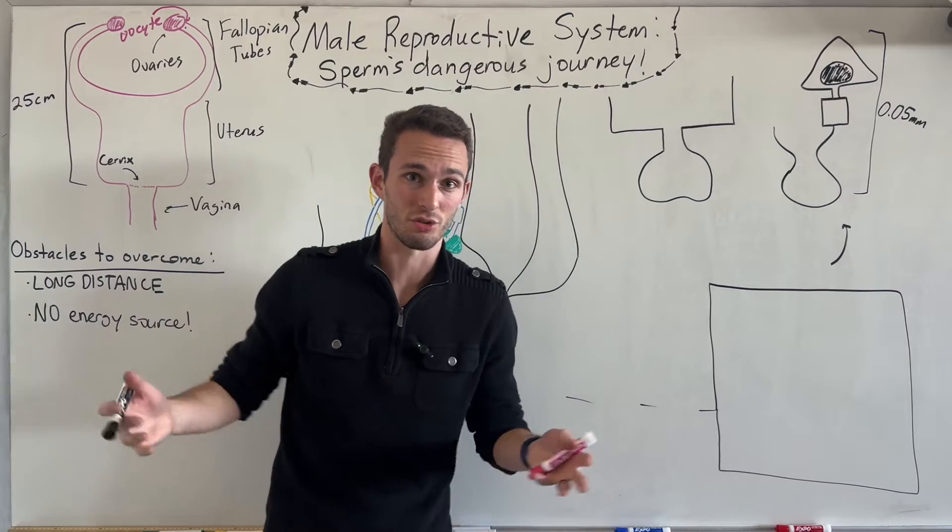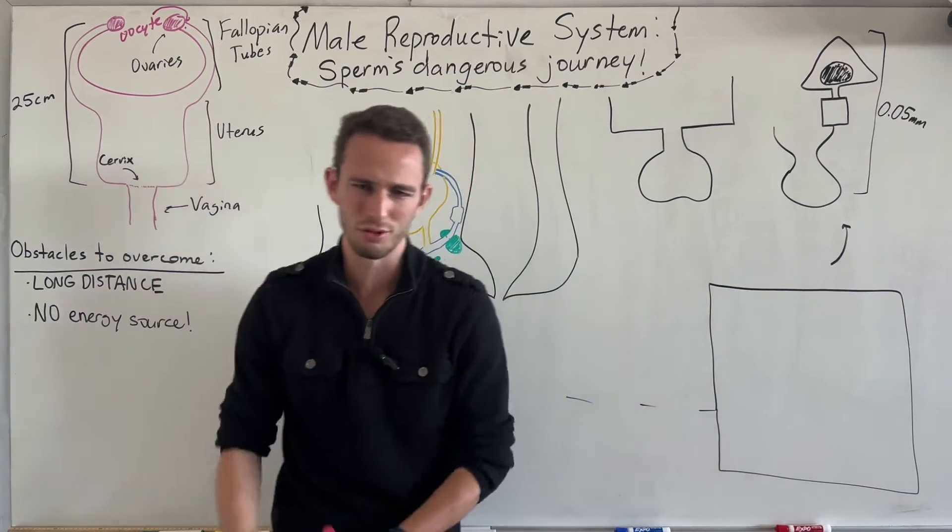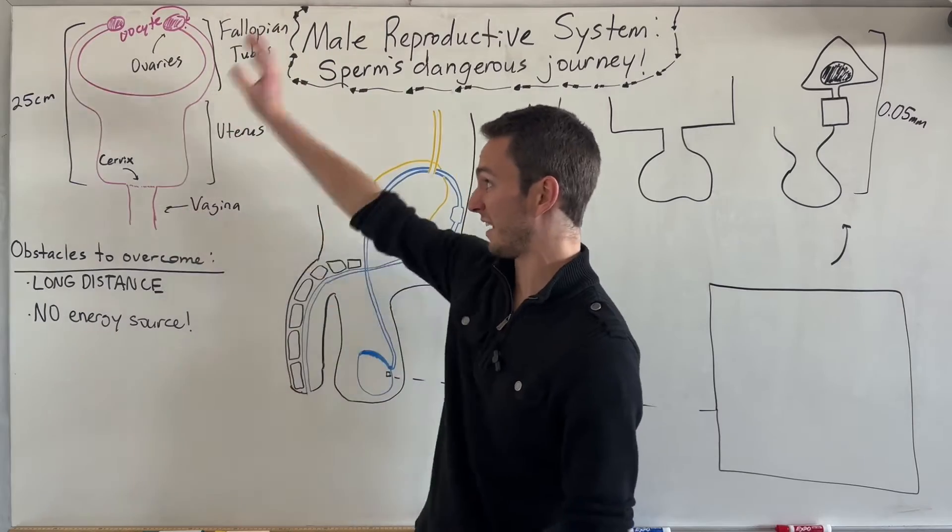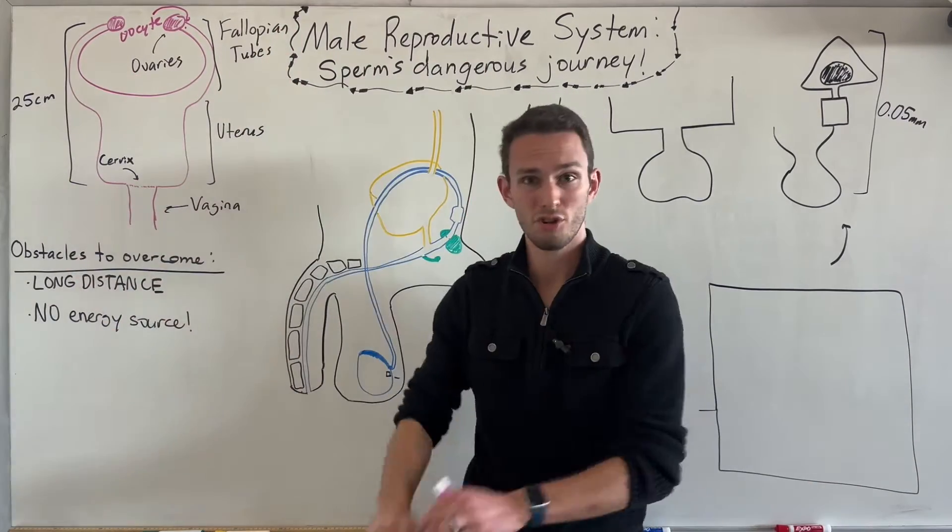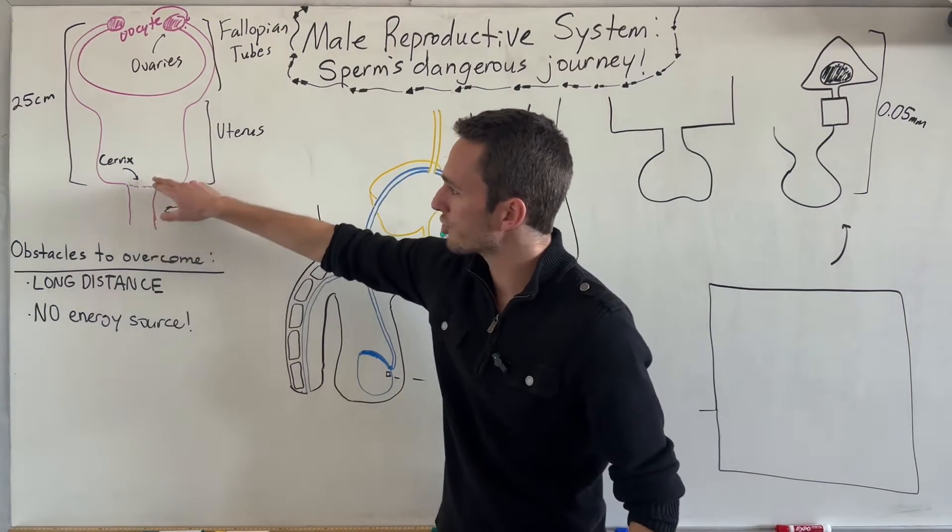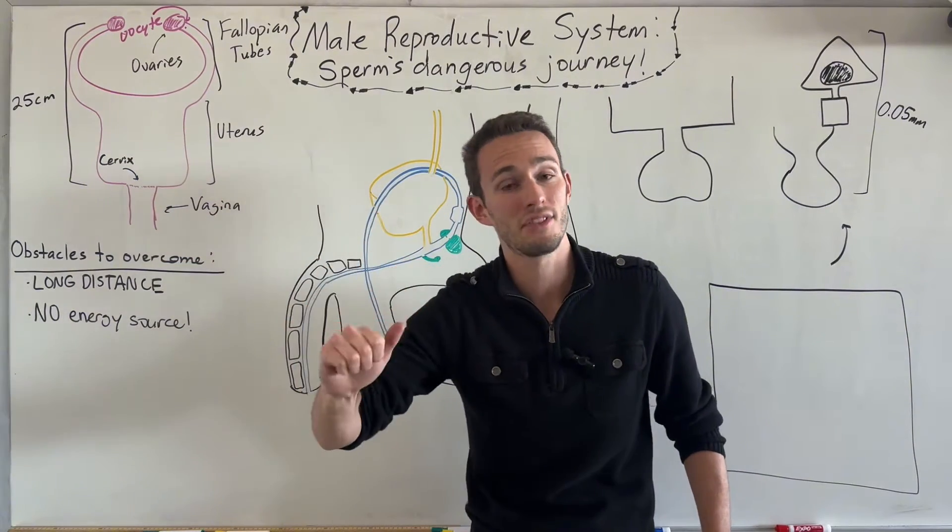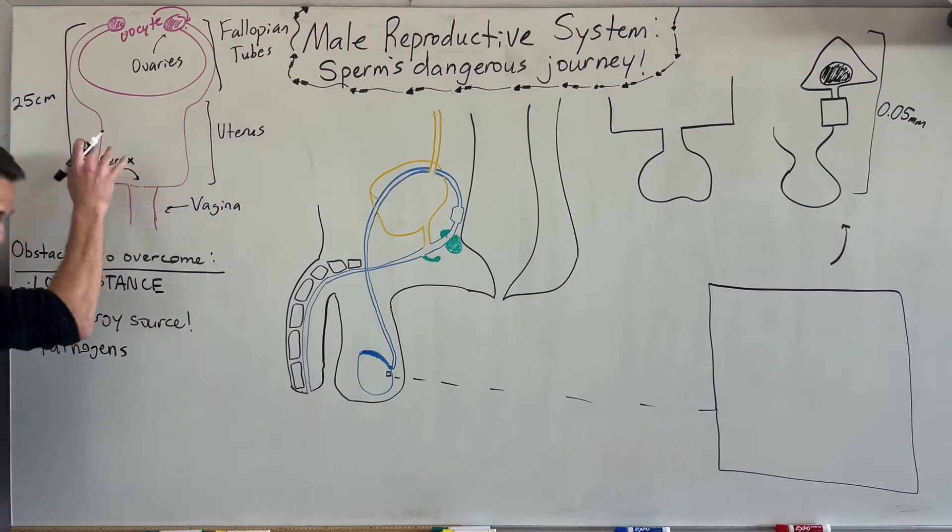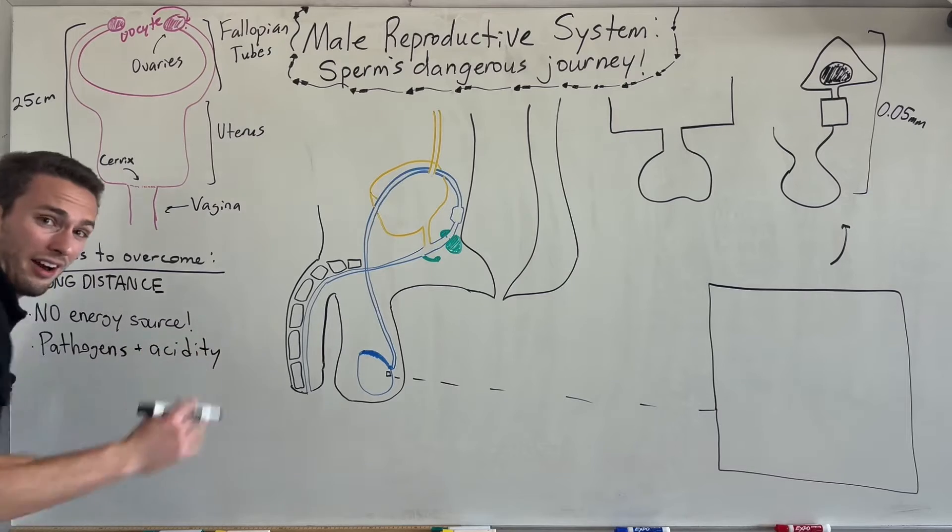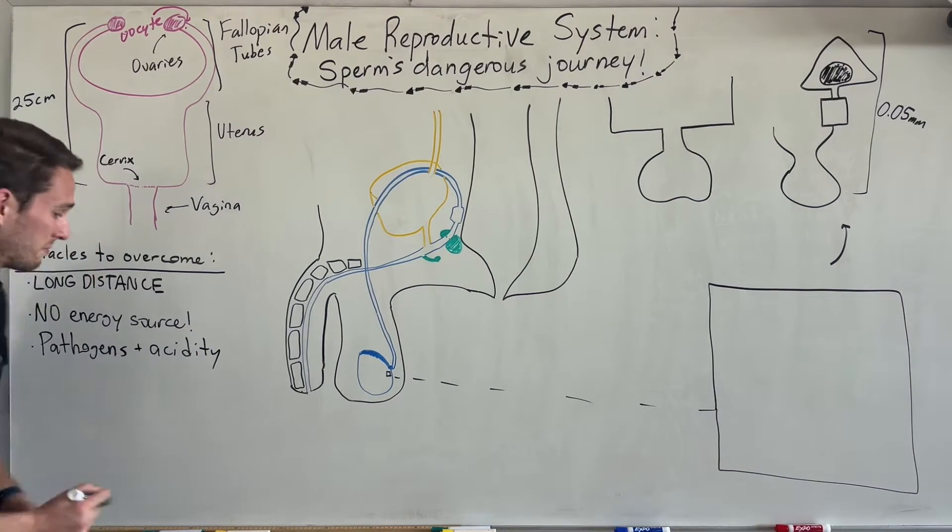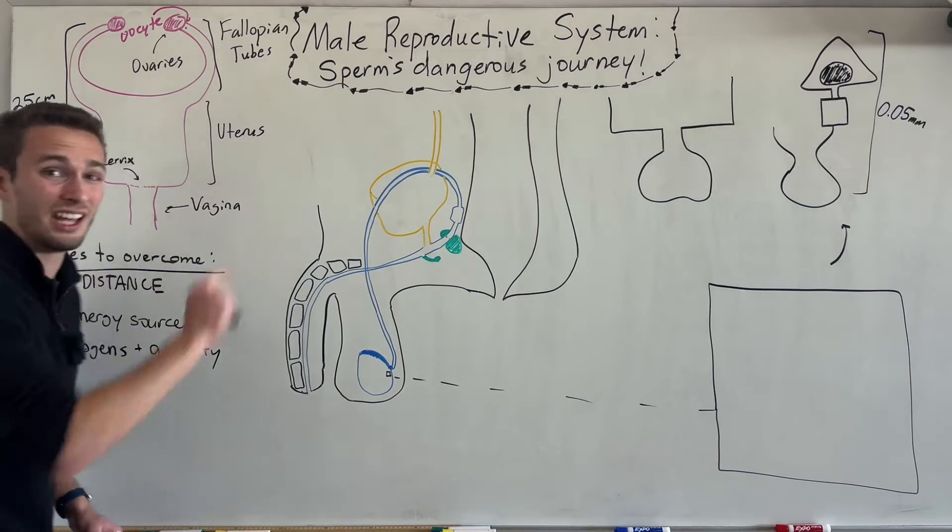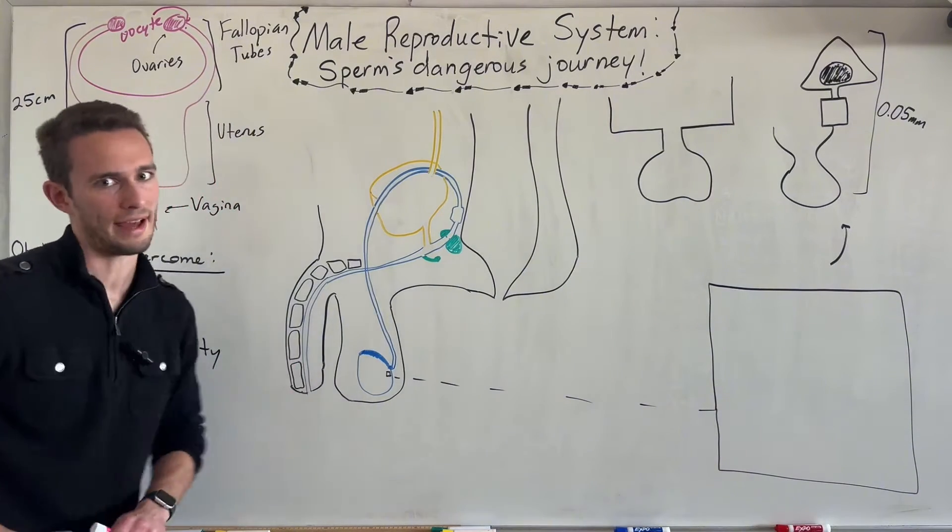Furthermore, not only does the sperm have to travel that whole distance, but it also has no food source or energy source whatsoever. Normally all your cells have an energy source from the blood, you're eating food, breathing in oxygen. But now you're transporting this sperm into this no man's land and just saying good luck, try to swim up there. So those are already bad enough, but then we've got several others.